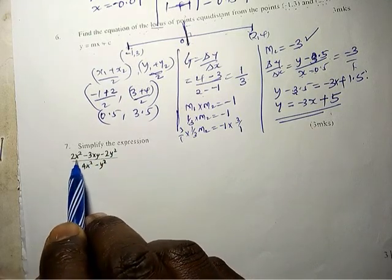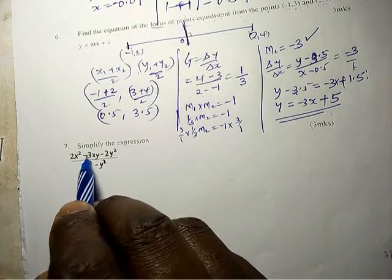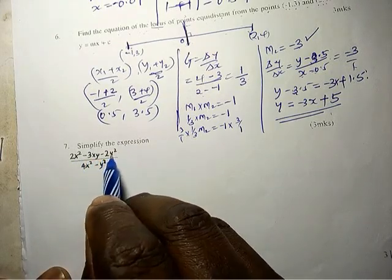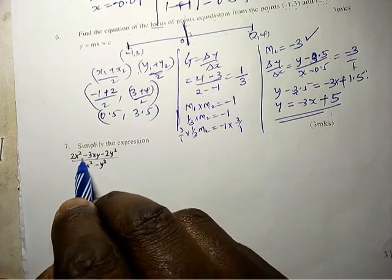Simplify the expression 2x² - 3xy... So first we start with the numerator. This is a quadratic, we will treat it as a quadratic equation.